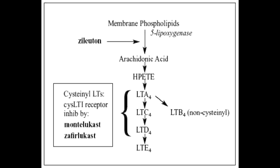What is the mechanism of action of montelukast and zafirlukast? The mechanism of action of montelukast and zafirlukast is to block the leukotrienes from binding to their receptor. Basically, these drugs block leukotriene A4, C4, and D4 from binding to its receptor.